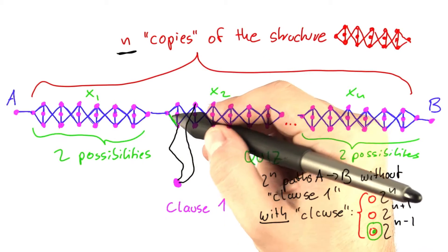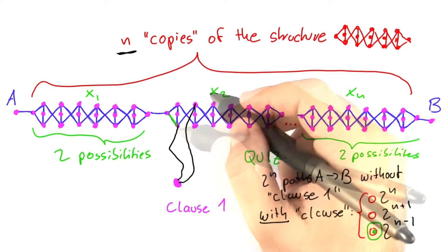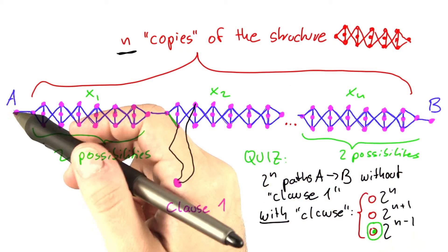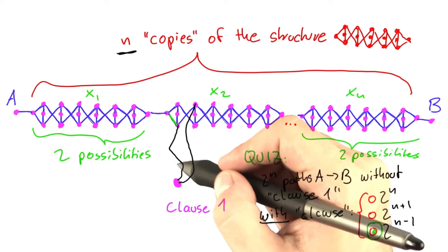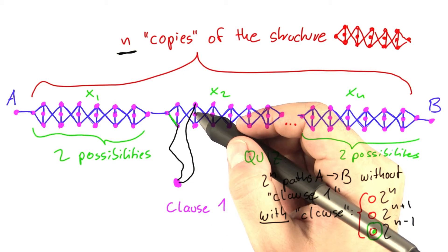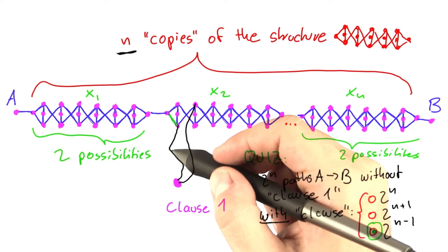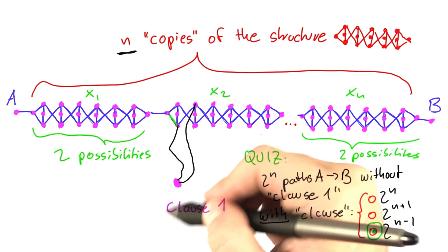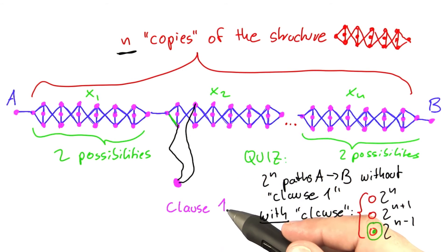So that we can only visit the city if the variable is set in the right way, because we said going up here means true, going down here means false, then we can ensure that a shortest path from A to B visits this vertex here, which means that we can also have a satisfying assignment for this clause here. And I'll illustrate this for you in more detail.